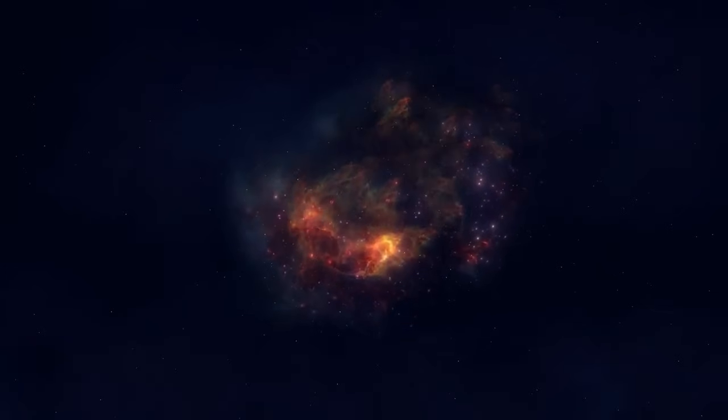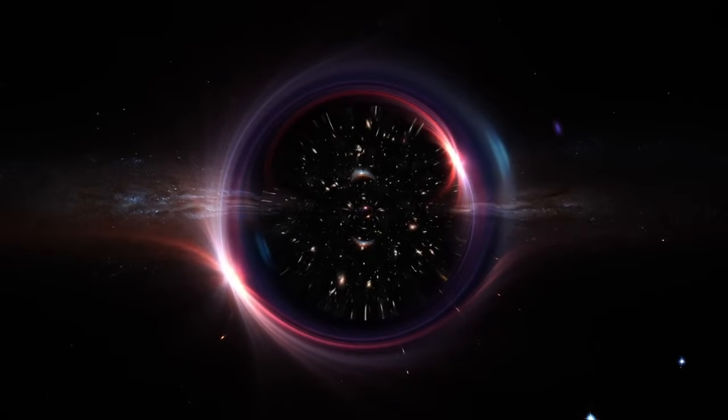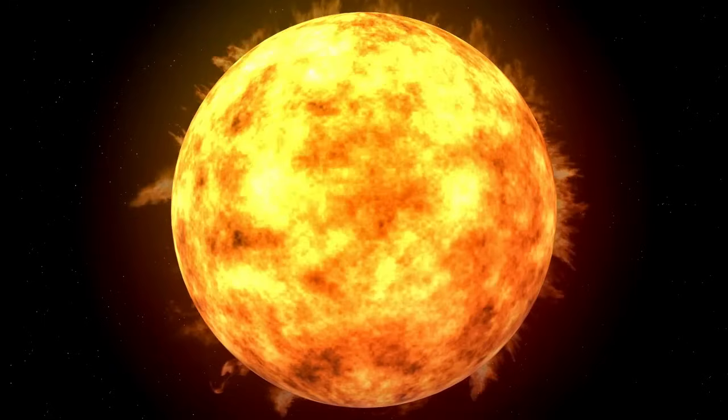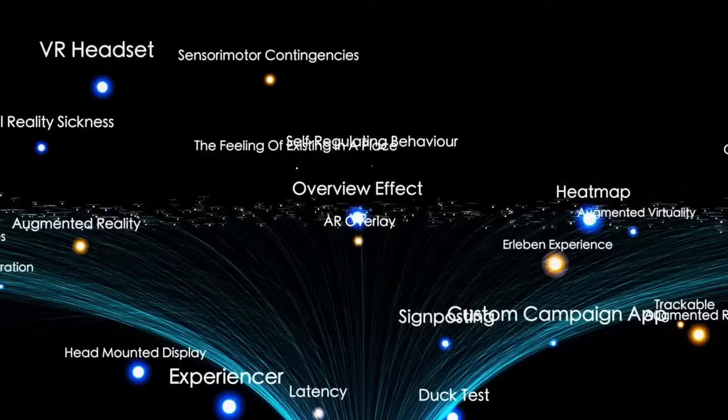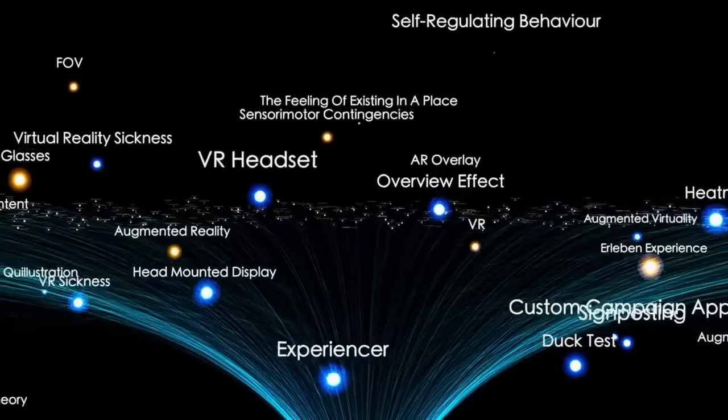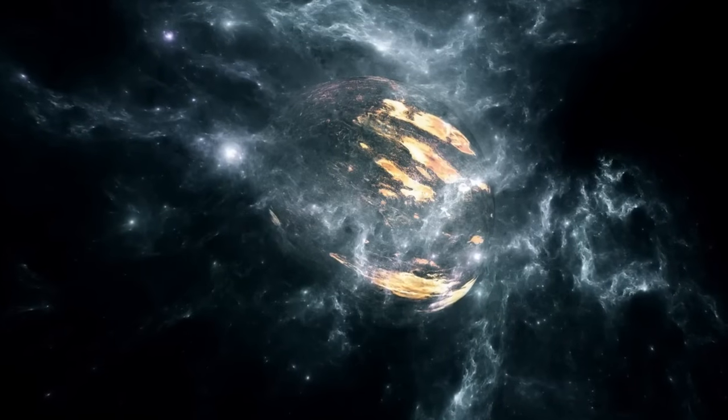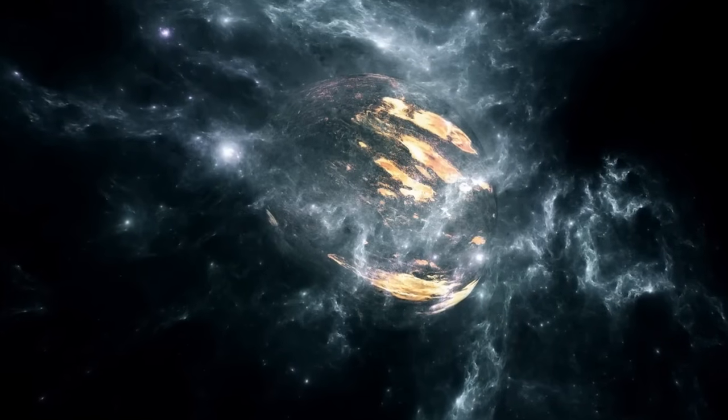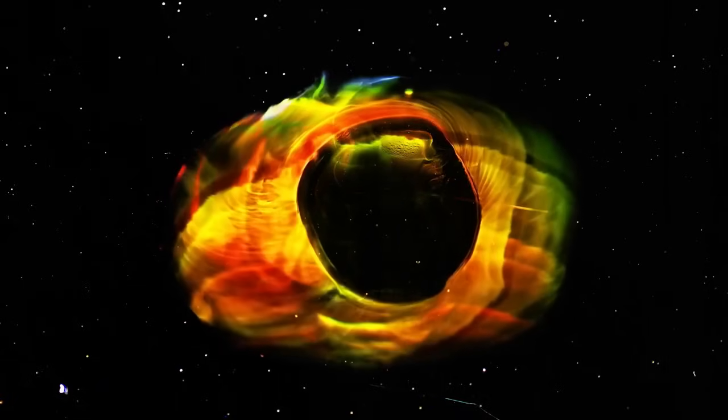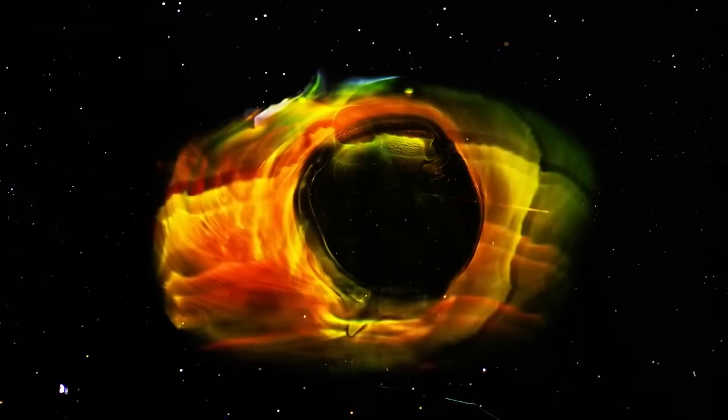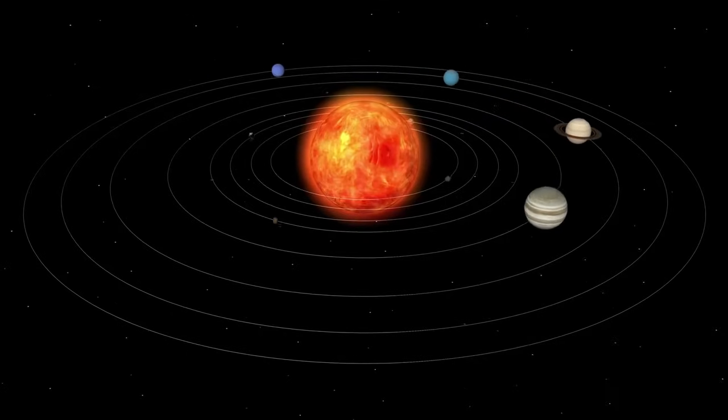So why is Betelgeuse such a significant star? Situated in the Orion constellation, which has featured in myths and astronomical lore for centuries, Betelgeuse is not only large and luminous, but also easy to observe with the naked eye. For scientists, it offers a unique opportunity to study the life cycle of massive stars. Unlike our Sun, which will fade gently over billions of years, red supergiants like Betelgeuse live fast and die young. It's well into its final stages of life, but the question has always been: when will it explode?